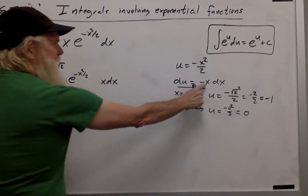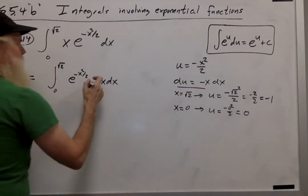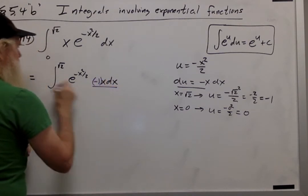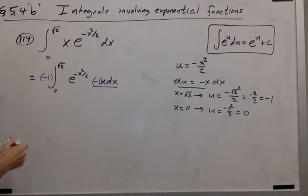Since I need a negative x dx for my du, I'll multiply it by a negative, which is like a negative 1 here, and cancel it by multiplying by another negative 1 outside. It goes negative 1 times negative 1 is 1.